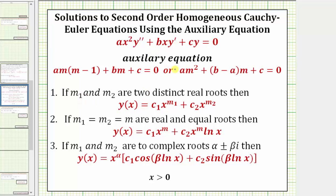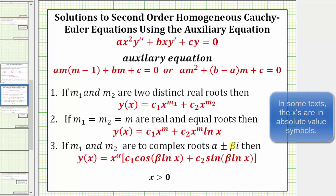If the auxiliary equation has two distinct real roots, this is the form of the general solution. If the auxiliary equation has two real equal roots, the general solution is in this form. And if the auxiliary equation has complex roots in the form of alpha plus or minus beta i, the general solution is in this form. In all cases, we assume x is greater than zero.